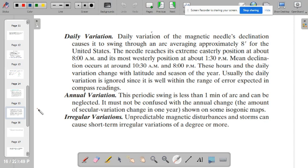So, we also have the annual variation. Annual variation, this is a periodic swing. This periodic swing is less than one minute of arc and can be neglected, but it must not be confused with the annual change. Annual change is the amount of secular variation change in one year, and it can be shown on an isogonic maps.